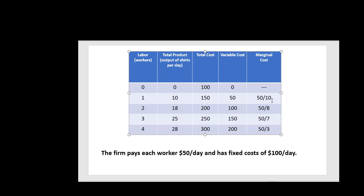Another way we could calculate this marginal cost column, instead of looking at the change in total cost divided by the change in output, we could look at the change in variable cost divided by the change in output. As we go from 0 to 50, that is a $50 increase in variable cost and the change in output is still 10. When we go from 50 to 100, the change in variable cost is still 50 and the change in output is 8, and so on. I hope you found this video helpful.